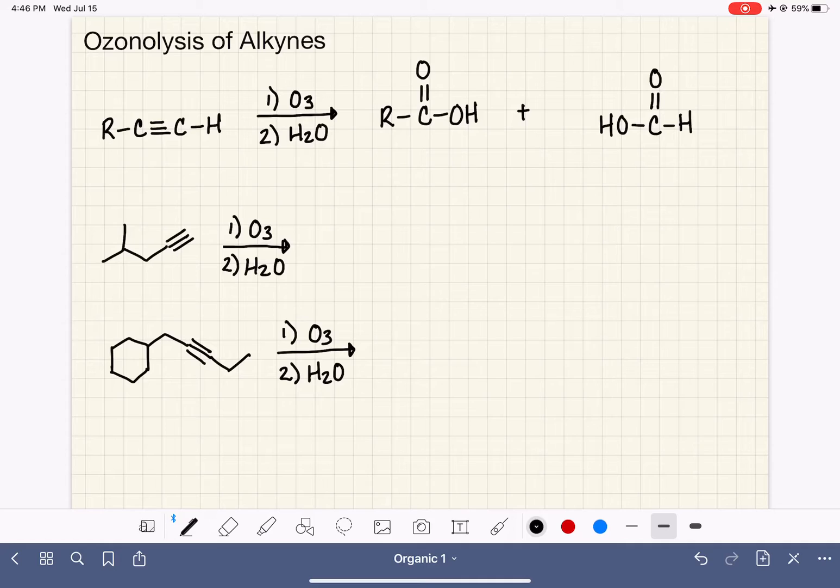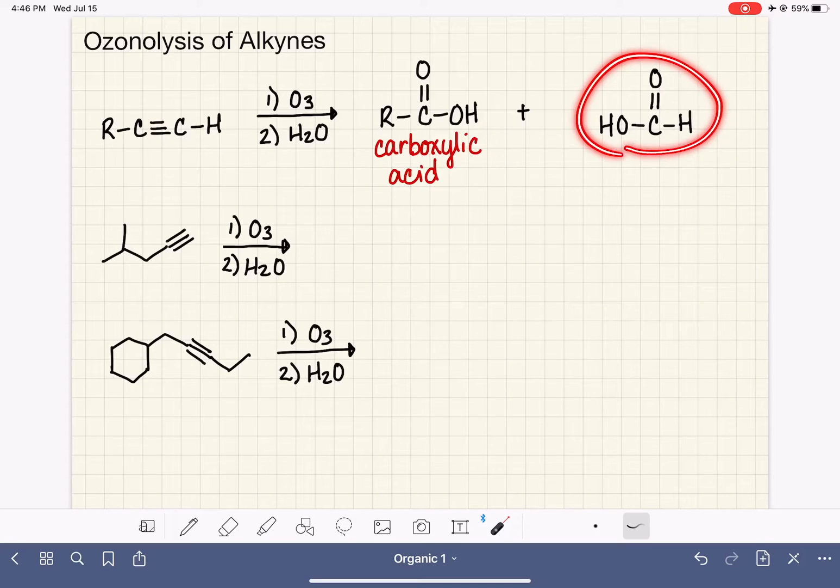And when we have an R group, we're just simply making a carboxylic acid from the ozonolysis. For a terminal alkyne like this, we are making this very small formic acid molecule. And this molecule is extremely unstable. It actually undergoes immediate decomposition, and it produces CO2 and some water.